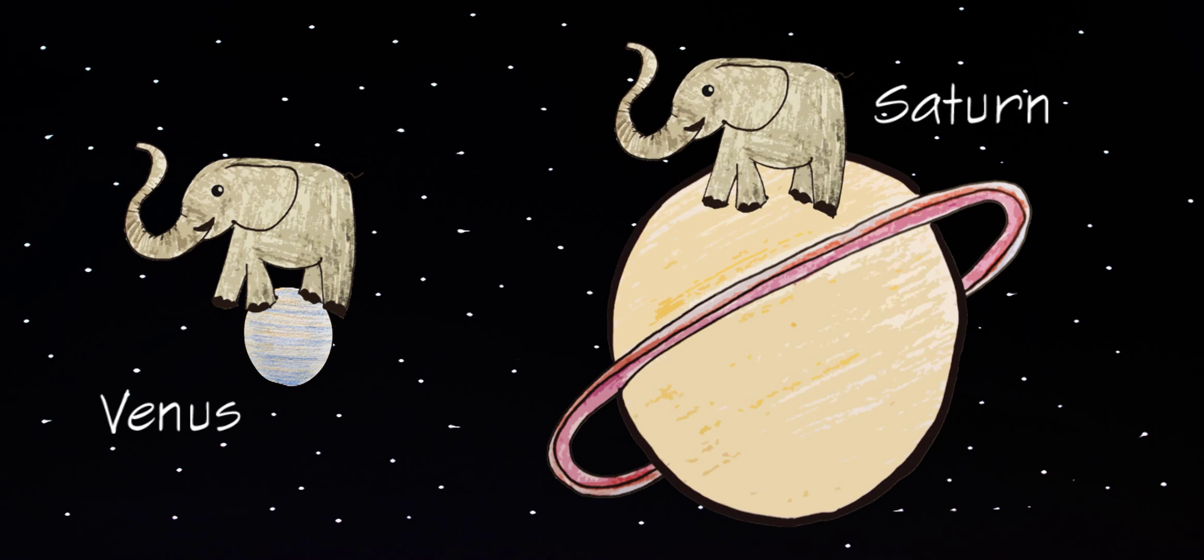So that pretty much should explain why an elephant would weigh almost the same on Venus and Saturn, which is 117 times as heavy, but 10 times as large.